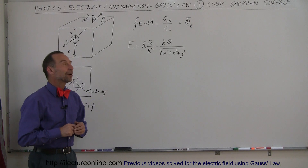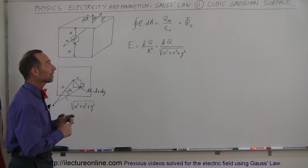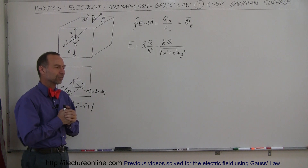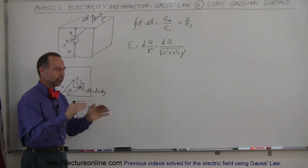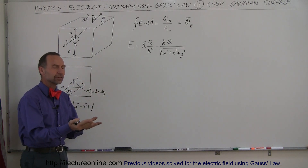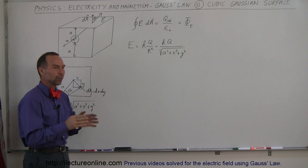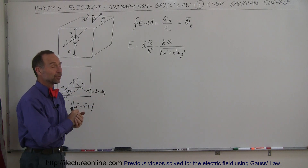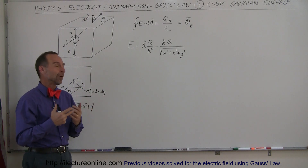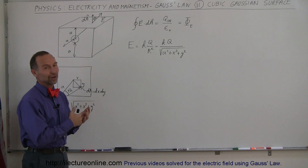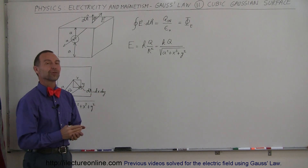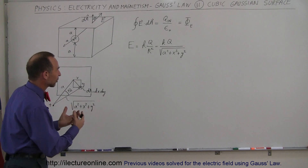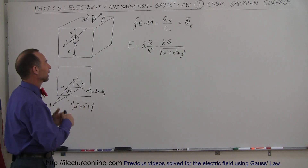Welcome to Electron Online. We're going to take a look at Gauss's Law in a different way. A lot of students always ask: why do we have to put spherical or cylindrical Gaussian surfaces around our charges? Why can't we just put a cube around our charges? This video is made to show you why you shouldn't try to put a cubic Gaussian surface around charges to find the electric field strength at a particular distance.